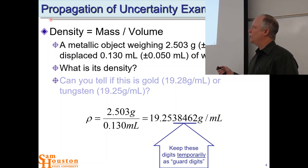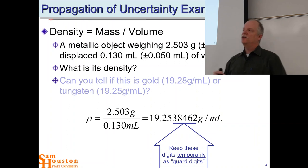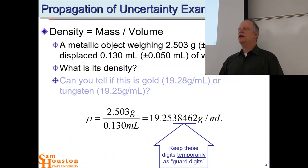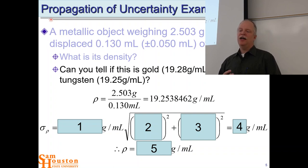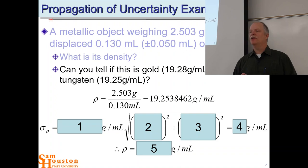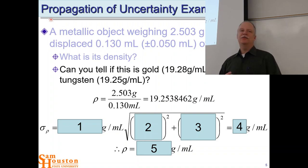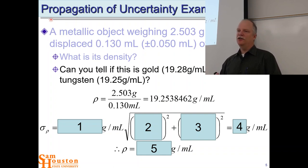The density comes out, and we keep all of these digits as guard digits. Before calculating uncertainty, we want to keep all those digits and hold on to them. But the question is: can you tell if this is gold at 19.28 or tungsten at 19.25? You really don't know at this point. It comes in at 19.25 if you round to the hundredths, so it should be tungsten — but I'm going to show you what the uncertainty in this measurement does to your confidence. And it destroys it, really.